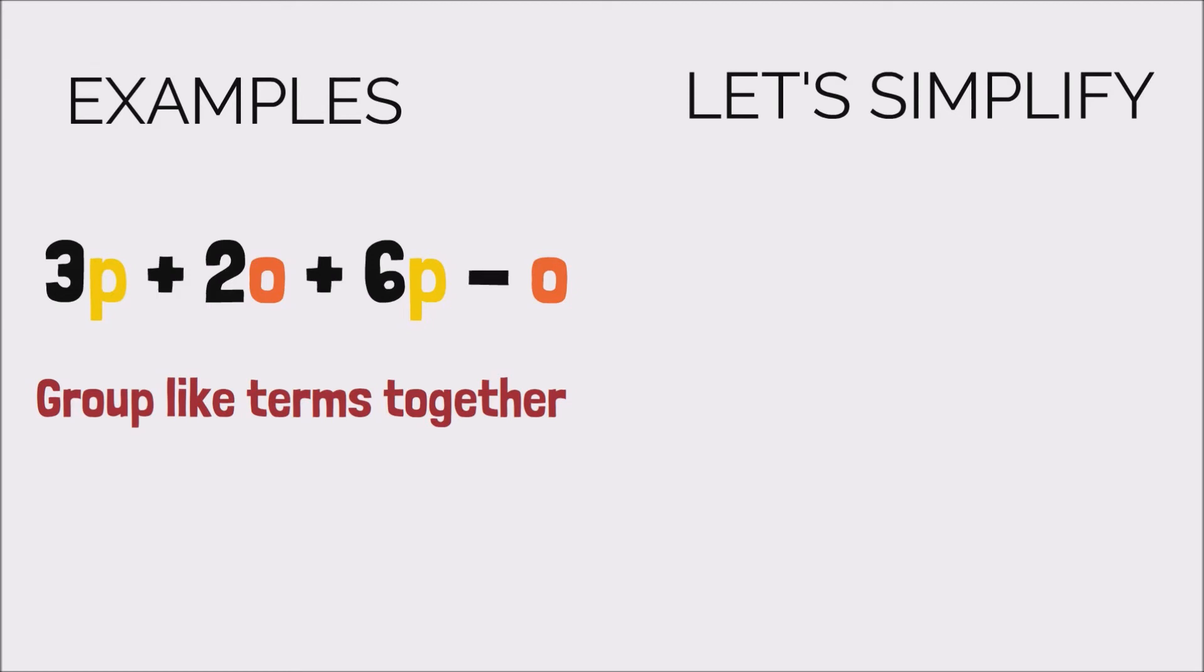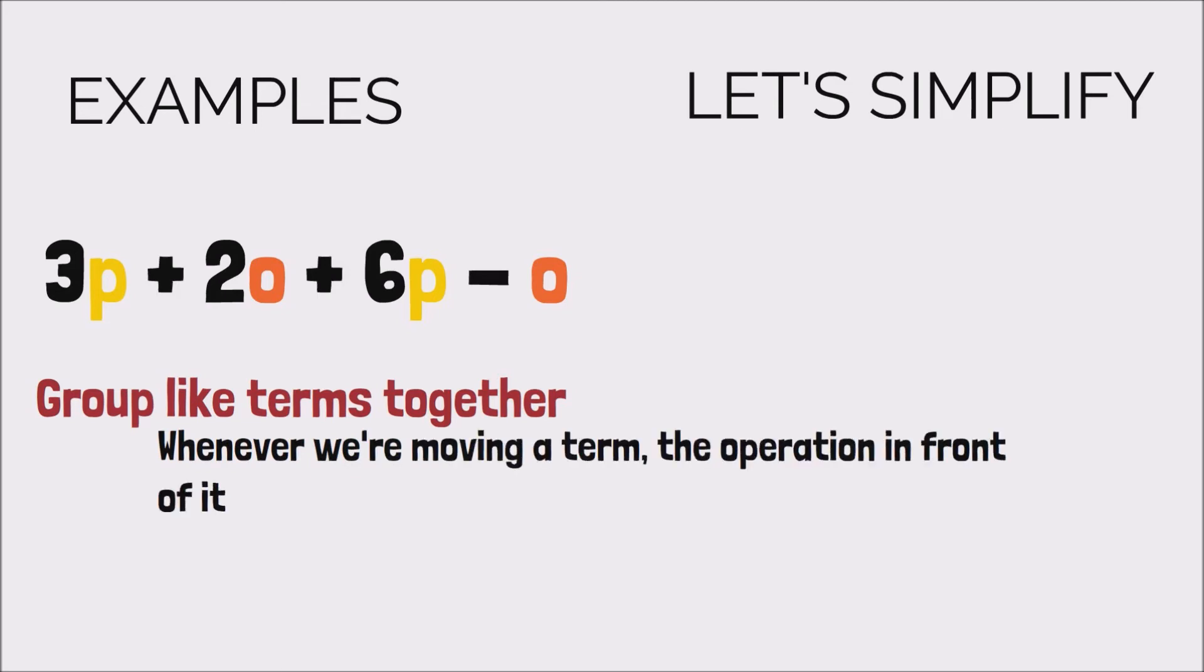Now, if you guys are confused about the plus and the minus sign, whenever we're moving a term, the operation in front of it moves with it as well. So watch me now. We're gonna move our 6P to go beside our 3P, so we write the 3P.